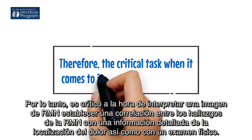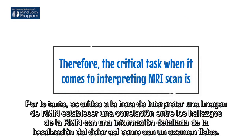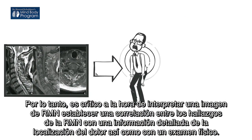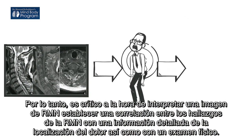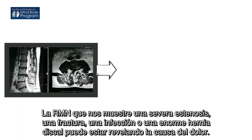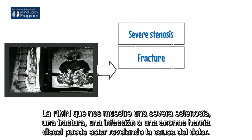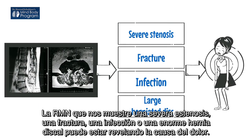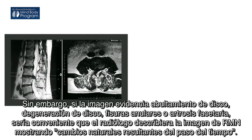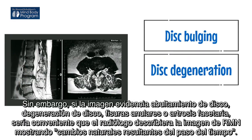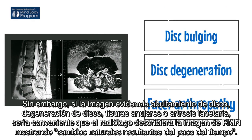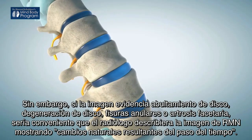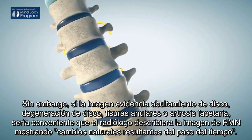Therefore, the critical task when interpreting an MRI scan is correlating the findings with detailed information about where your pain is located, and also with a physical exam. If your scan shows severe stenosis, a fracture, an infection, or a large herniated disc, it may be revealing the cause of your pain. However, if it shows disc bulging, disc degeneration, annular tears, or facet arthropathy, it would be much better if the radiologist described the MRI scan as showing natural changes that occur to the spine with time.